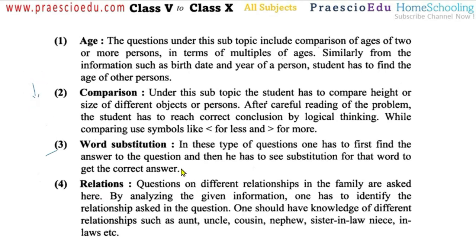All these types are mainly covered in verbals. The last one is relation. Relations means the person's relations, and on the basis of the given information we have to analyze and use our knowledge of relation names — such as aunt, auntie, cousin, nephew, sister-in-law, and so on. These relation names should be in your knowledge, so students must read more and more relation names.